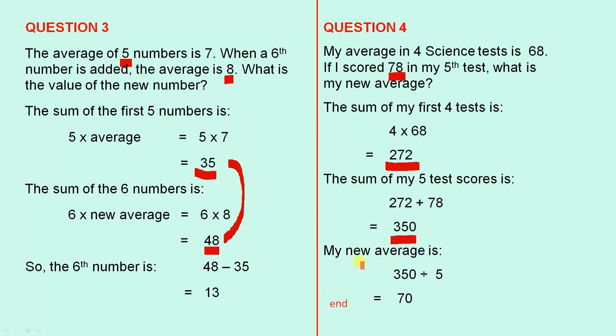So my new average - we have 350 divided by 5, because the sum of the 5 test scores after you scored 78 is 350. So if we divide 350 by 5, it gives us a new average of 70.